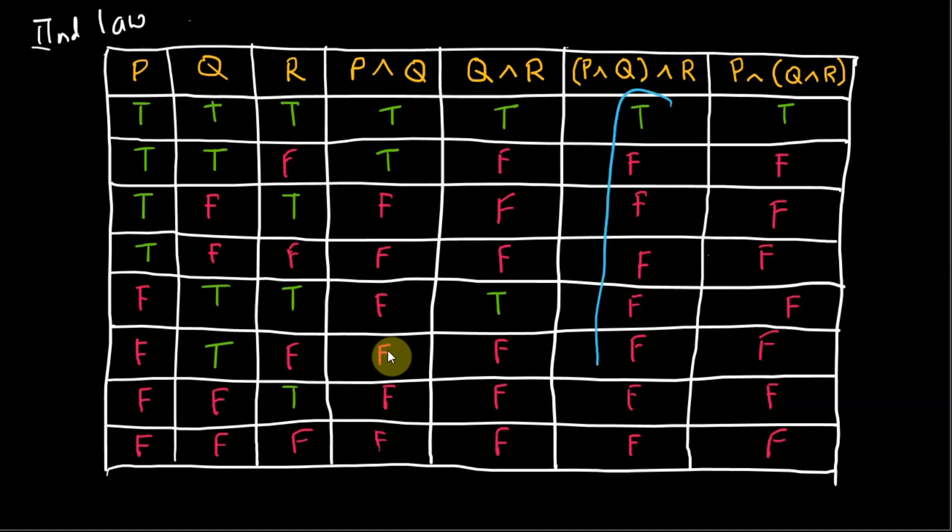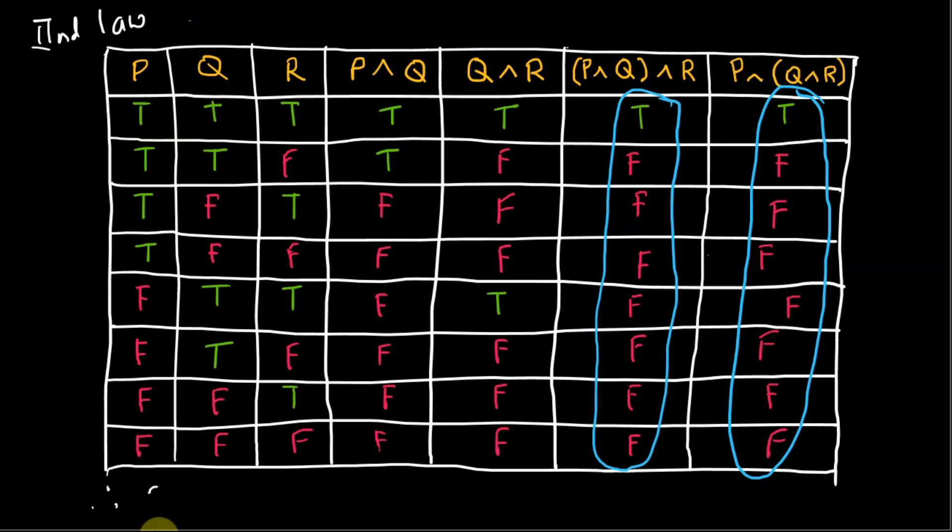The results show that the column p and q and r is equivalent to p and q and r. Therefore, the second logical equivalence of associative law is also valid.